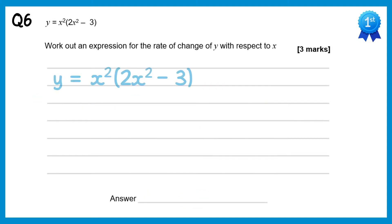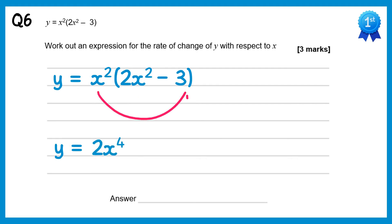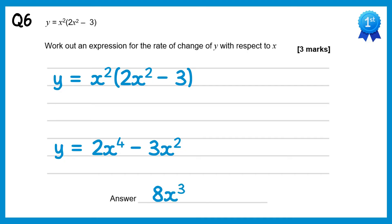For this function we also need to expand the brackets: x squared times 2x squared is 2x to the power 4, and x squared times negative 3 is negative 3x squared. Now we can differentiate: 4 times 2 is 8, reduce the power down from 4 to 3, giving x cubed. For the next term, 2 times negative 3 is negative 6, reduce the power down from 2 to 1, giving just x.